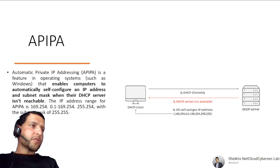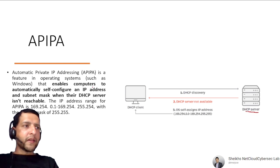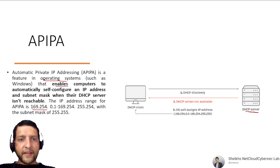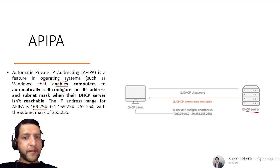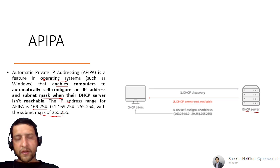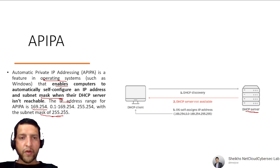APIPA (Automatic Private IP Addressing) is a feature in operating systems such as Windows that enables computers to automatically self-configure an IP address and subnet mask when their DHCP server is not reachable. The IP address range for APIPA is 169.254.x.x with the subnet mask 255.255.0.0. If you run ipconfig and see a 169.254 address, your PC cannot communicate with the DHCP server.